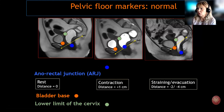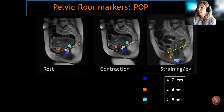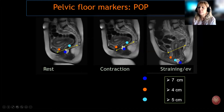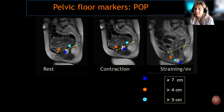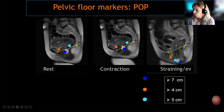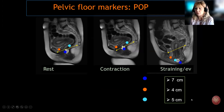This is just an example of the three markers — anterior, middle, and posterior compartment — at rest, contraction, and during straining. You can see that the posterior compartment marker displaces slightly below the pubococcygeal line, so this is a normal patient. In an abnormal patient with pelvic organ prolapse, you will see variable displacement of the markers below the pubococcygeal line depending on the degree of prolapse — in this case, 7, 4, and 5 centimeters.